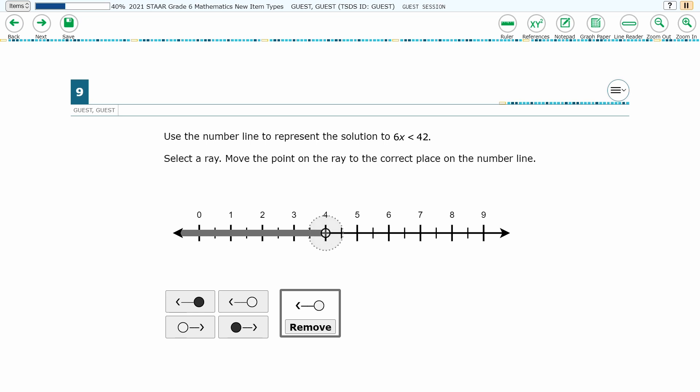If the student wants to choose a ray with a different type of endpoint or going in a different direction, they will need to click Remove to erase the ray they already have and click on the new type of ray they want.